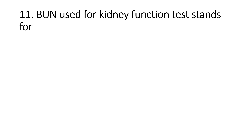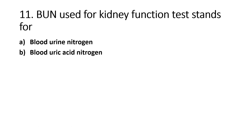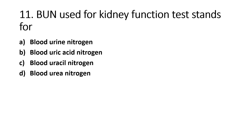BUN, used for kidney function testing, stands for: Option A - Blood Urine Nitrogen, Option B - Blood Uric Acid Nitrogen, Option C - Blood Uracil Nitrogen, Option D - Blood Urea Nitrogen. The right answer is Option D, Blood Urea Nitrogen — a metabolic product of amino acid breakdown.